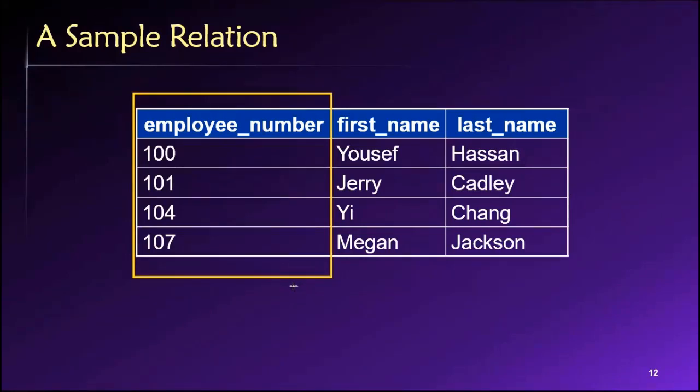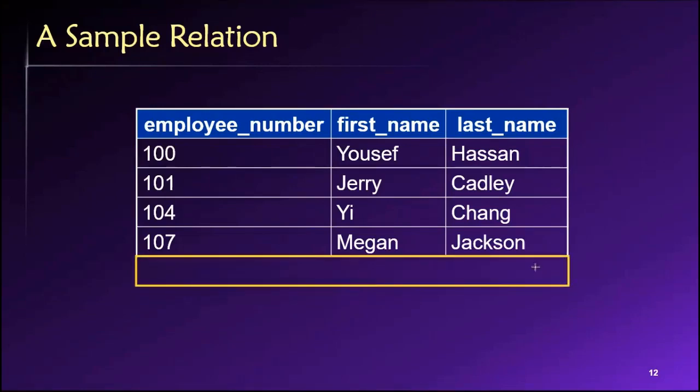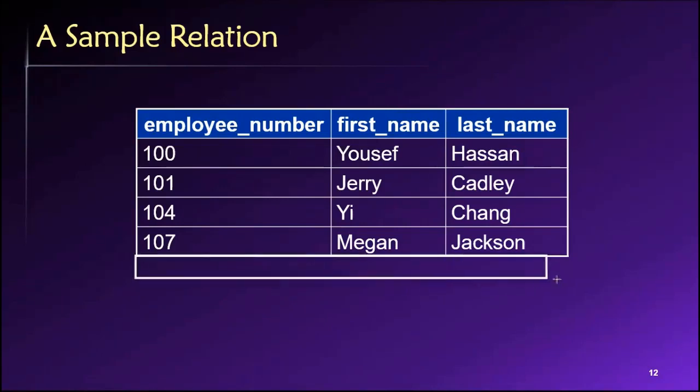And the interesting thing about this is it guarantees uniqueness for every row. So remember how when we were looking at the requirements for a table to qualify as a relation.